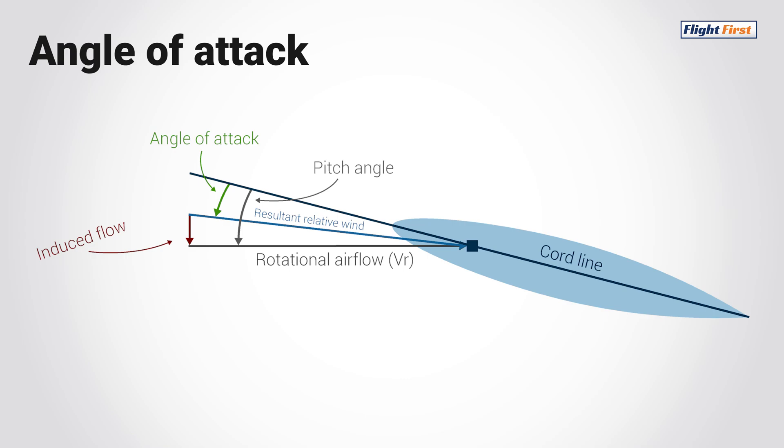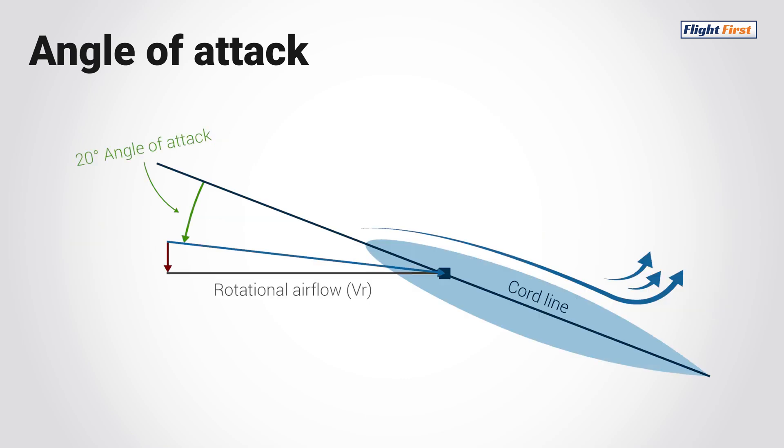We can continue to increase the angle of attack up until it reaches the critical angle. The critical angle is a point in which the airflow around the airfoil transitions from a laminar flow into a turbulent flow. Once the air starts to become turbulent, the airfoil will experience a rapid loss of lift.